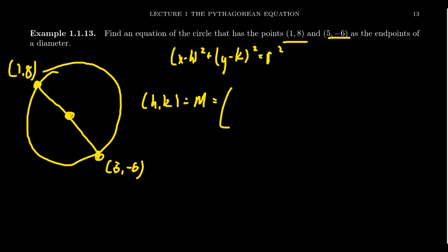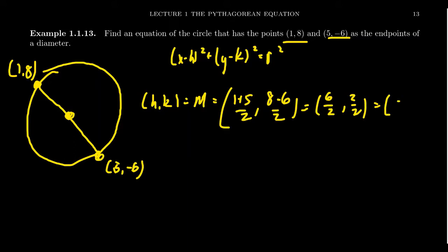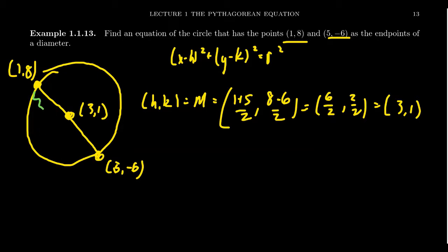To find the midpoint, we average the x coordinates — one plus five over two — and average the y coordinates — eight plus negative six over two. One plus five is six over two equals three, and eight minus six is two over two equals one. So the center of the circle is three comma one. We can find the radius by measuring the distance between one of the endpoints and the center.